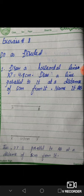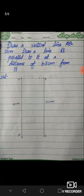We have drawn a line here, a horizontal line. We have drawn line AB, 10 cm.